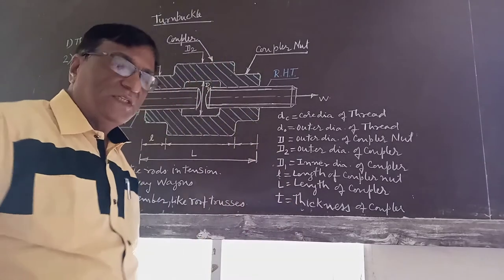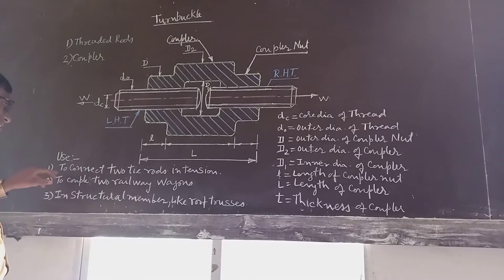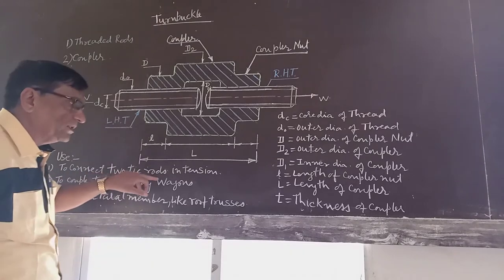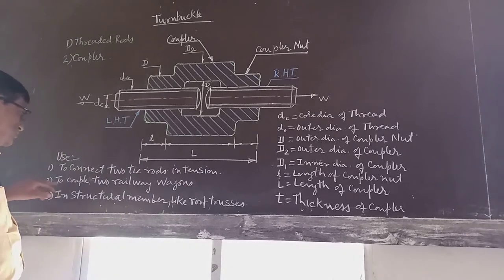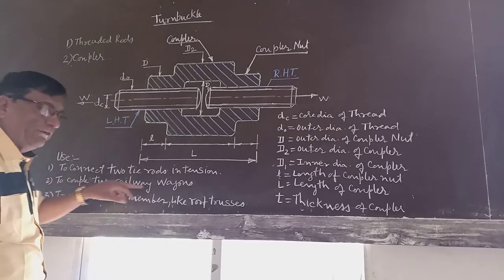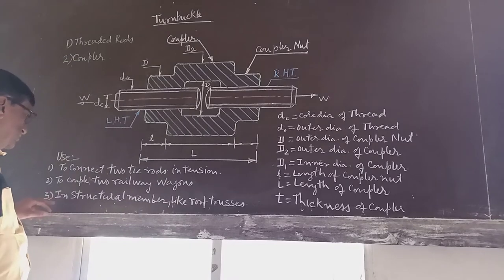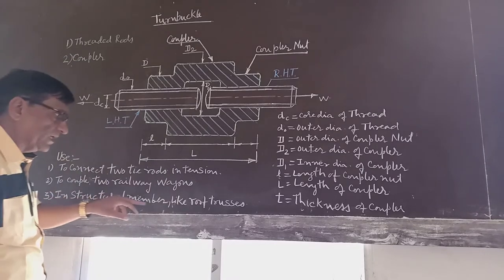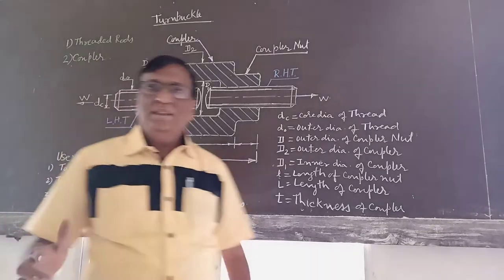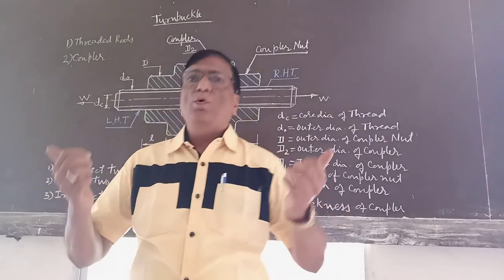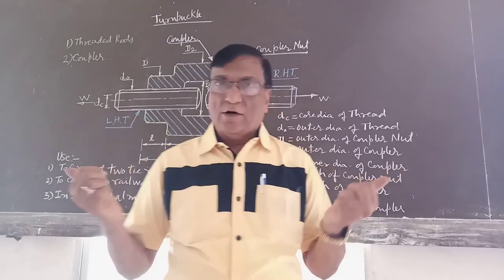Now, the different uses of the turn buckle. It is used to connect two tie rods in tension. It is used to couple two railway vehicles. It is used in structural members like roof trusses. It is used where it is required to adjust the tension, like in cables or tie rods.